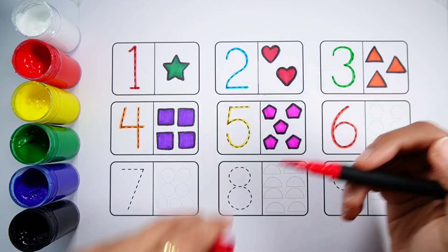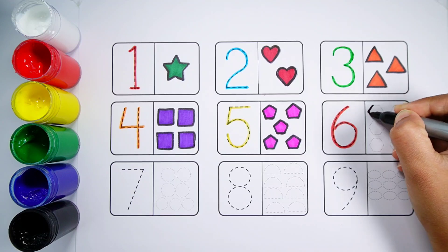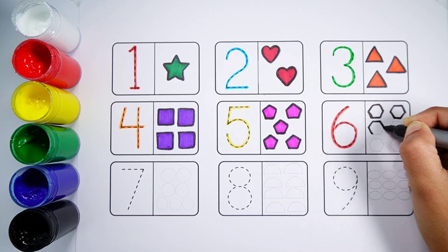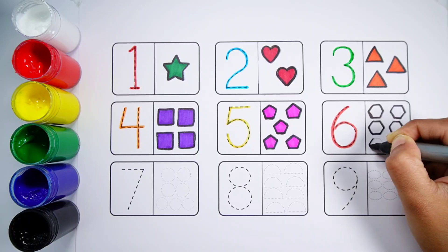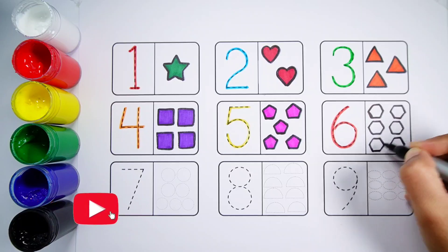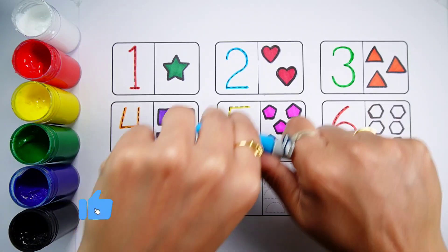Number 6. One, two, three, four, five, six. Six hexagons. Blue color.